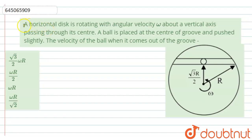The given question is: a horizontal disk is rotating with angular velocity omega about a vertical axis passing through its center. A ball is placed at the center of groove and pushed slightly.